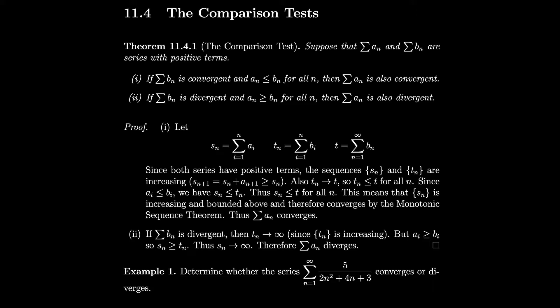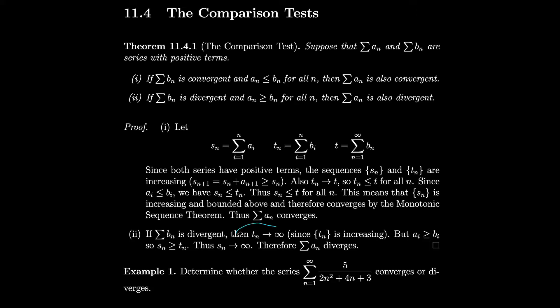If we take a look at the second part of the theorem — if the sum is divergent and a_n is greater than or equal to b_n for all n — then T_n tends to infinity because T_n is increasing and this sum is divergent, but our a_i's are greater than or equal to all of our b_i's now. So the partial sum of the a_i's is greater than or equal to T_n, so that goes to infinity, which means that a_n diverges by definition.